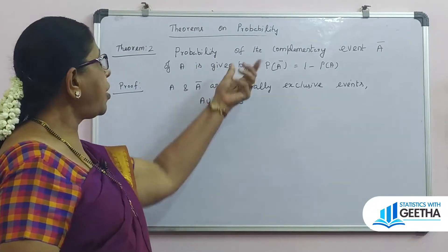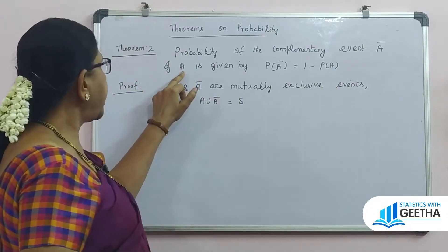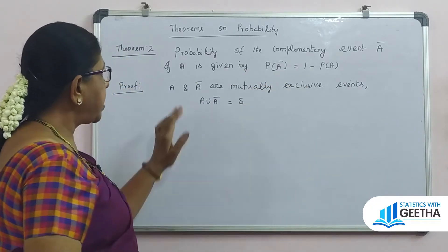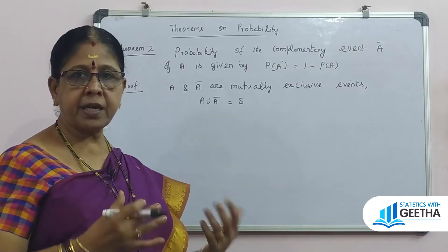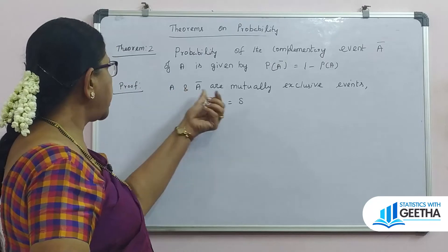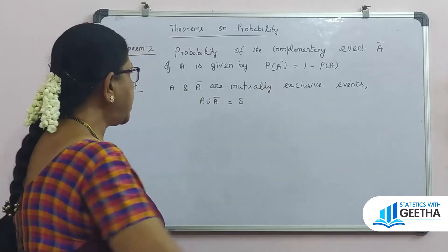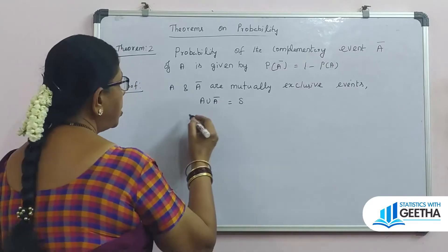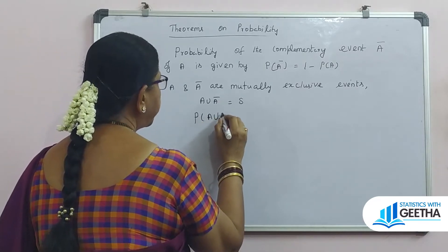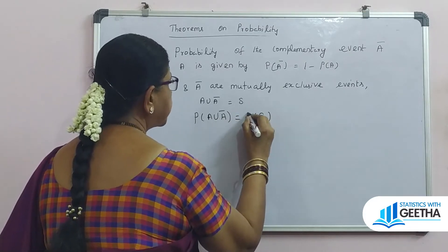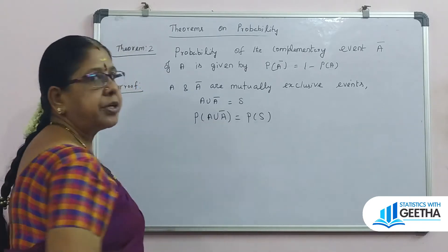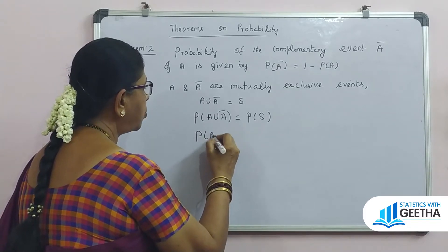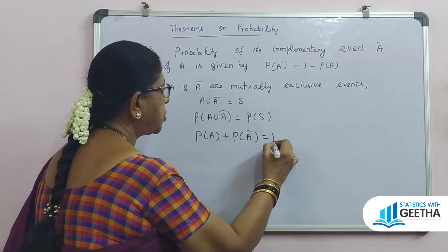Next theorem: the probability of the complementary event. P(A complement) is given by P(A') = 1 minus P(A). Proof: A and A complement are mutually exclusive and disjoint events. Taking probability on both sides, we have probability of A union A complement equal to P(S).